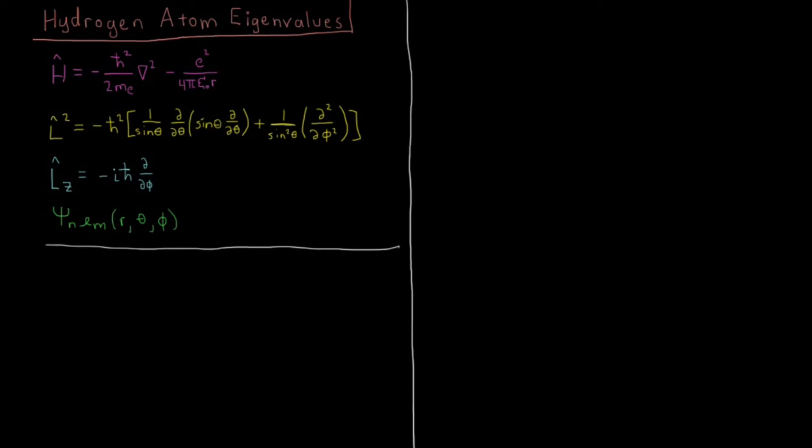So these operators that we're looking at are the Hamiltonian, which for the hydrogen atom is just a kinetic energy of the electron, minus h-bar squared over 2 times mass of the electron times Laplacian operator, the del squared, minus E squared, its charge, the magnitude of its charge squared over 4 pi epsilon not R. That's just the Coulomb force between the proton fixed at the origin and the electron.